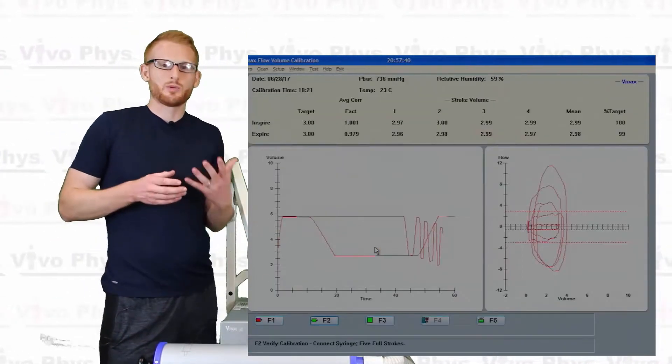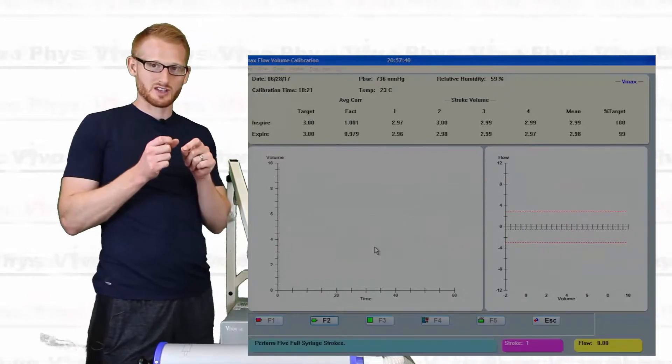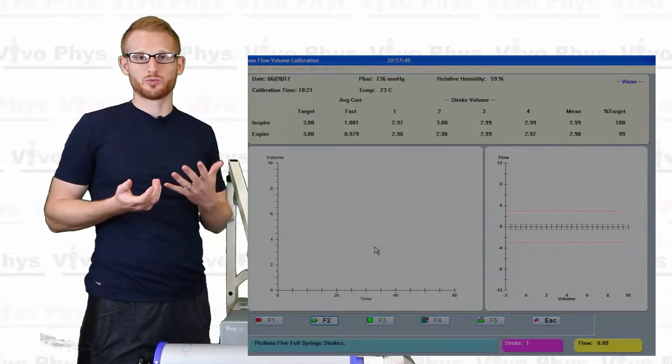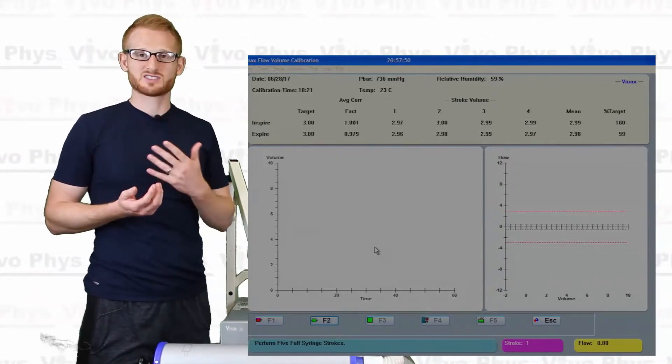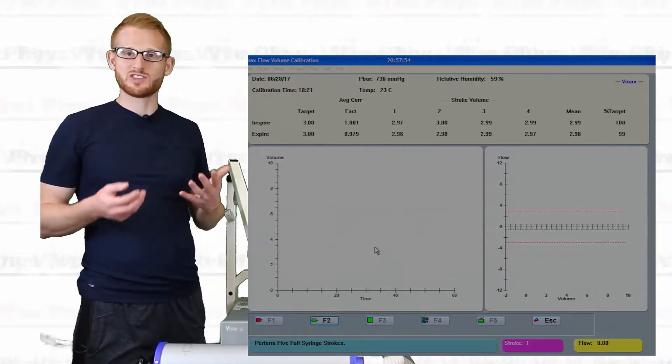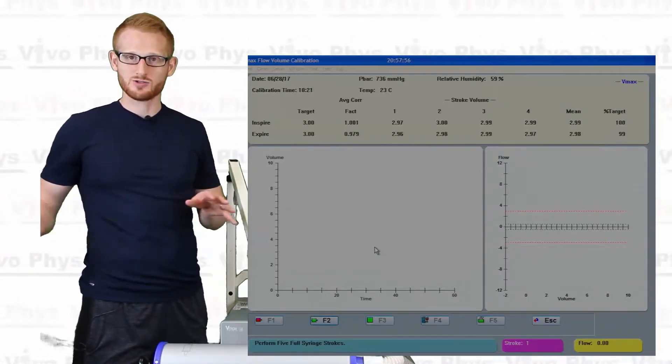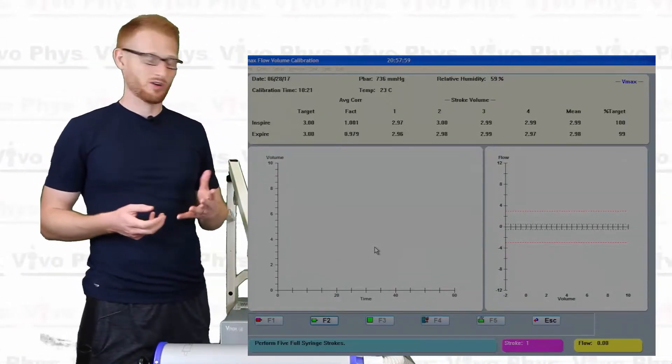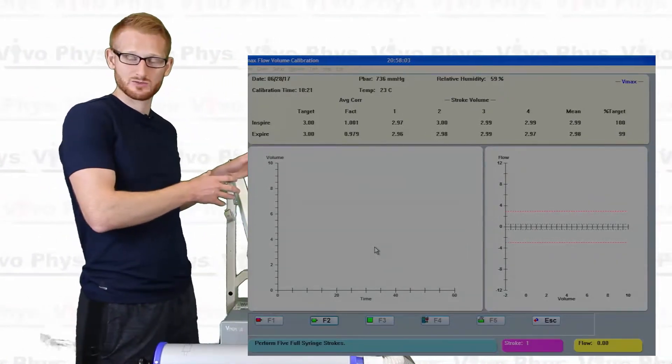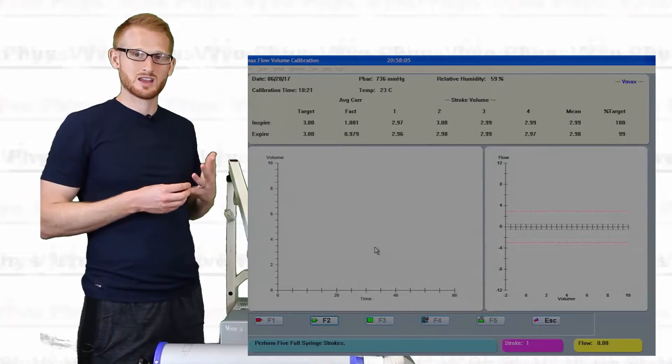Alright, so you can see there it took me a couple extra tries because a couple of those inspirations and expirations didn't go into the range as much as what the system wanted it to do in order to use that as a calibration. Alright, so but once you get them all, so you can, if you fail that's okay, you just keep going and trying until you get them all. But once you get them all, it's going to pump you, push you into this window here and you're essentially going to do the same thing again.